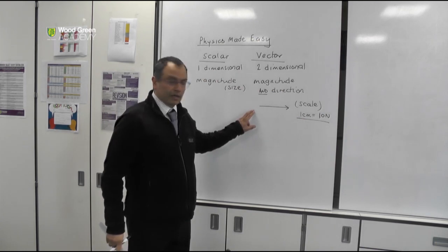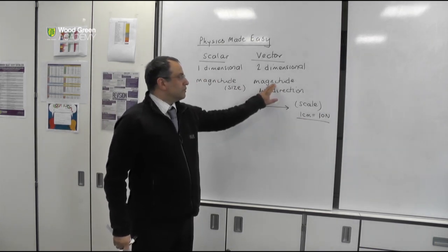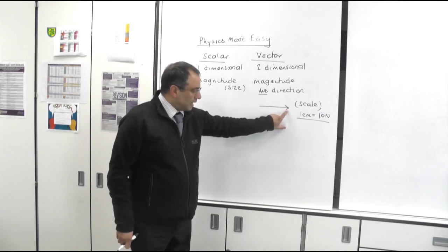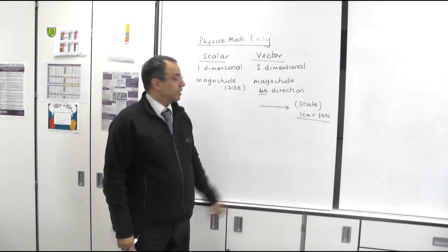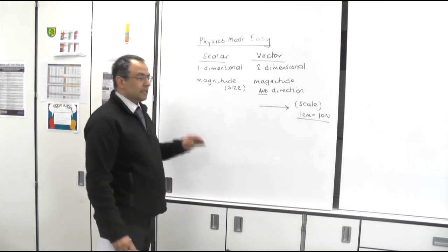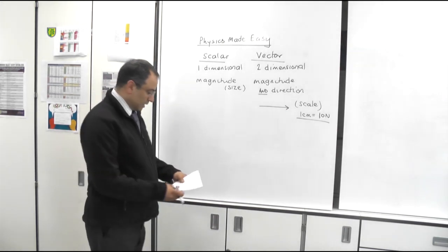So the length of the arrow gives you an idea of the size, the magnitude, and the arrow gives an indication of the direction. Let's take this a little bit deeper.